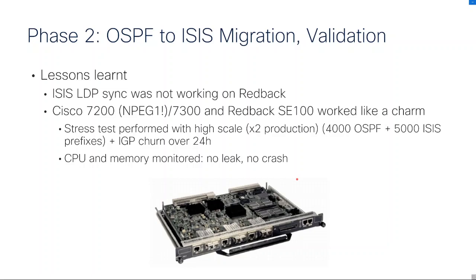The other big surprise was the legacy. We were very afraid that the Cisco 7200 and the Redback SE100 would not scale because those were very old devices with very small CPU and very small memory. We spent a lot of time testing scale — with a traffic generator we injected a lot of prefixes and also injected churn over 24 hours just to see how the routers behaved. At the end it just worked. We doubled the scale in the lab to have some headroom, and ultimately there were no crashes, no memory leaks — a very big surprise.